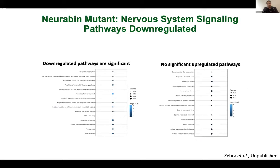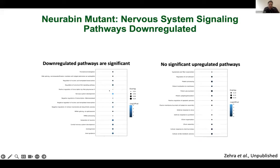Long-read sequencing brought this level of depth to the analysis. Pathway analysis of dysregulated genes strongly indicated the pathway for nervous system development — how neurogenesis happens — which gets dysregulated by these genes in the neurobin mutated cell lines.